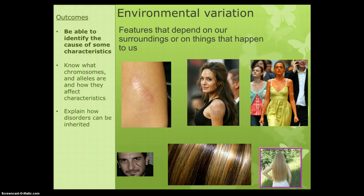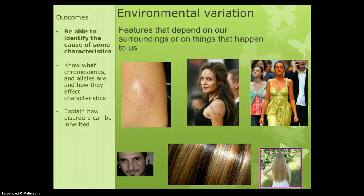Some examples of environmental variation — these are things that depend on our surroundings or things that have happened to us. Scars or burns are definitely environmental. Tattoos, whether or not you've turned your skin orange, is definitely environmental. The tone of your hair, so if you've dyed your hair, that would be environmental variation. The length of your hair as well, because that's something you can choose to cut short or let grow long, and your decisions to do that are often based on environmental influences.